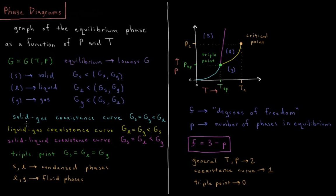Some other features of the phase diagram: we have the solid-gas coexistence curve, shown as the light blue line. At the coexistence curve, the Gibbs energy of two phases is equal to one another. For solid-gas coexistence, the Gibbs energy of the solid equals the Gibbs energy of the gas, and both are less than the Gibbs energy of the liquid. Depending on the amount of heat input or removed from the system, you can get various fractions of the system in solid or gas.